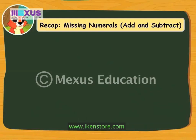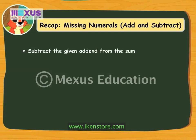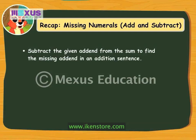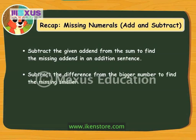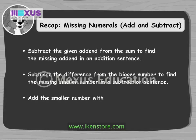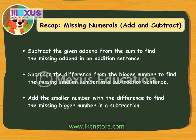Finding the missing numbers in addition and subtraction statements is hard work, but these points from today's lesson will help us a lot. Subtract the given addend from the sum to find the missing addend in an addition sentence. Subtract the difference from the bigger number to find the missing smaller number in a subtraction sentence. Add the smaller number with the difference to find the missing bigger number in a subtraction sentence.